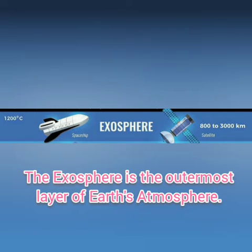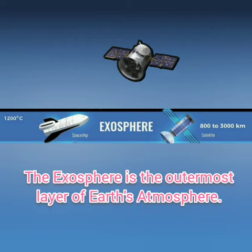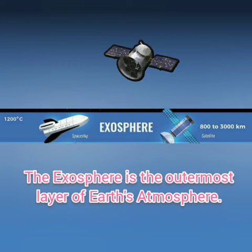Fifth, the Exosphere. The Exosphere extends to a height of 1600 km and merges into outer space. The thin air in this layer contains helium and hydrogen. Ultraviolet rays fill this layer, and fan glows called zodiacal light, which occur due to sunlight reflected from particles of meteoritic dust, originate in this layer.